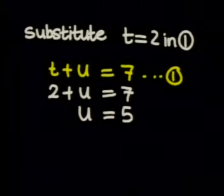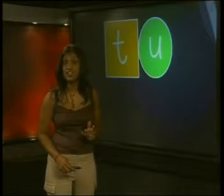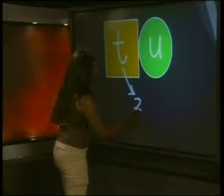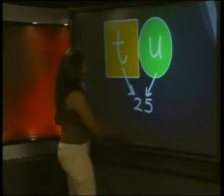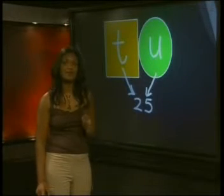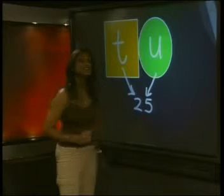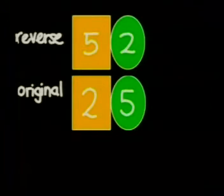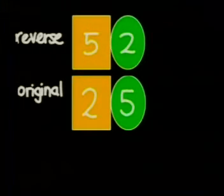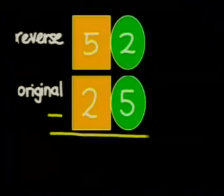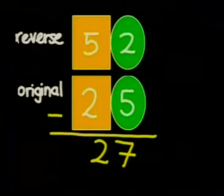I still need to find the value of U. I substitute T equals 2 into equation 1, so I get 2 plus U equals 7, which gives U equals 5. So the units column of the number is 5. The number is 25. Now we need to check that it works. Do the digits add up to 7? Yes, 2 plus 5 equals 7. If I reverse the original number, I get 52. The original question stated that when the digits are reversed, the new number exceeds the original by 27. So 52 minus 25 equals 27. Correct!